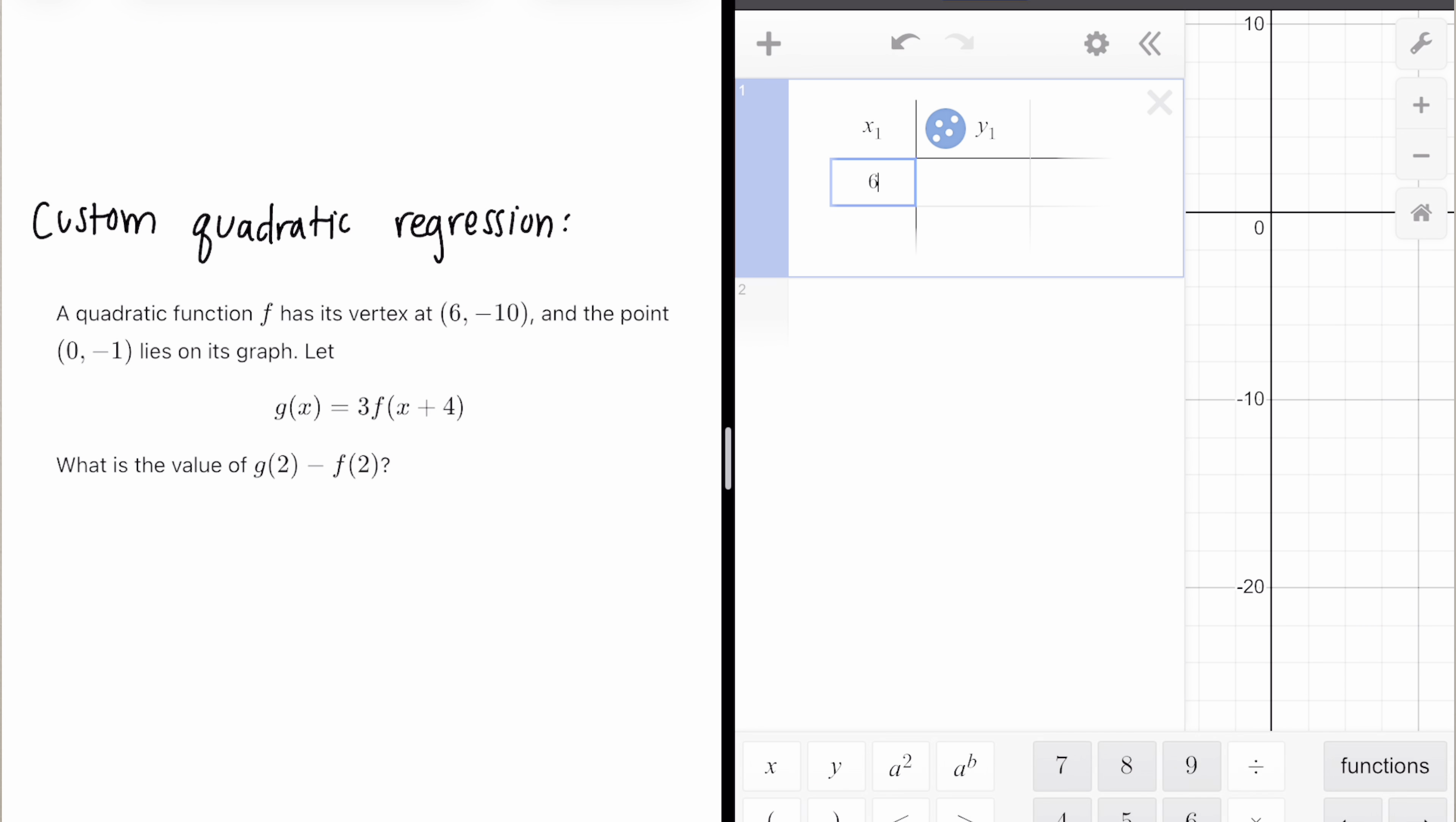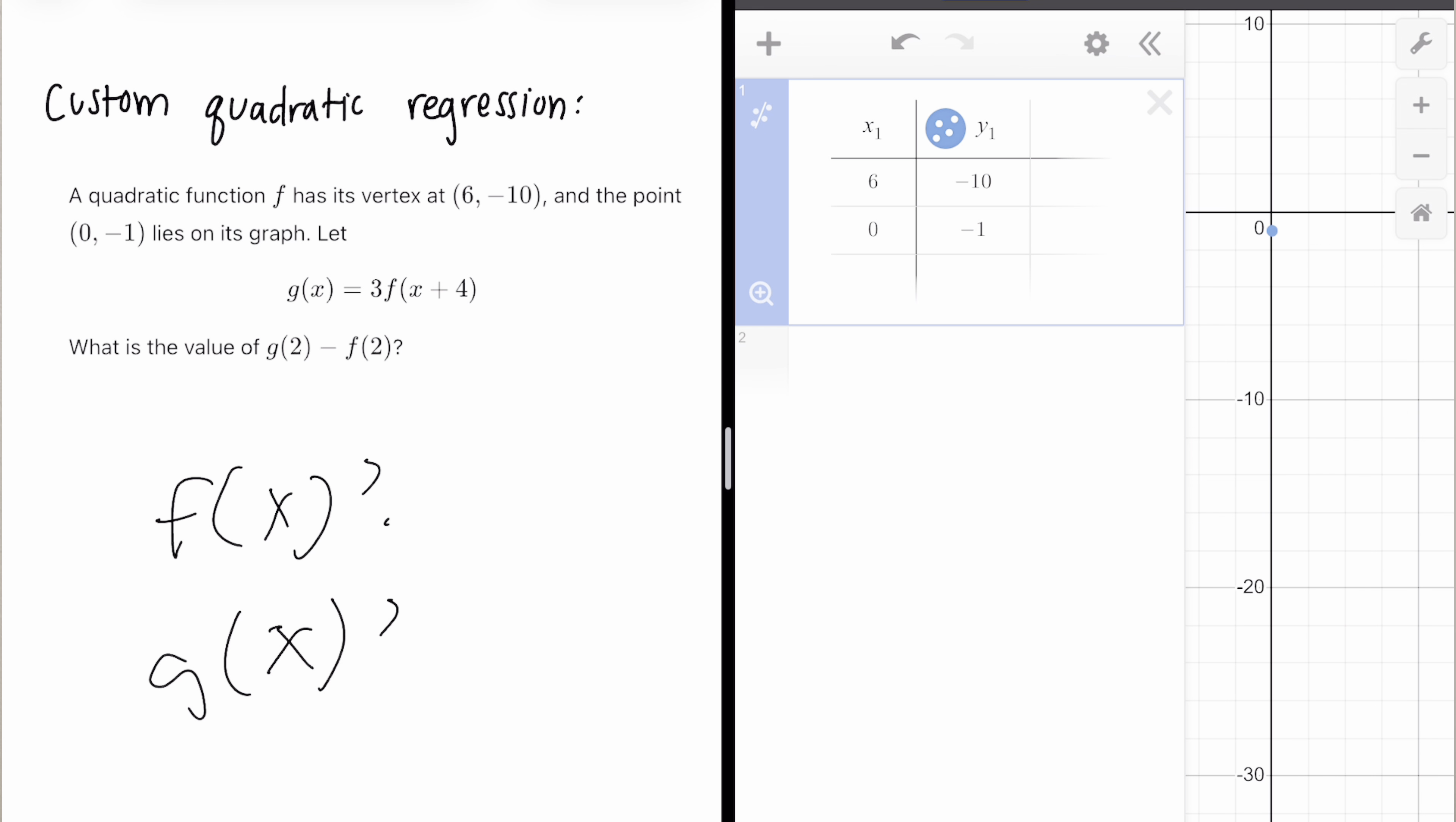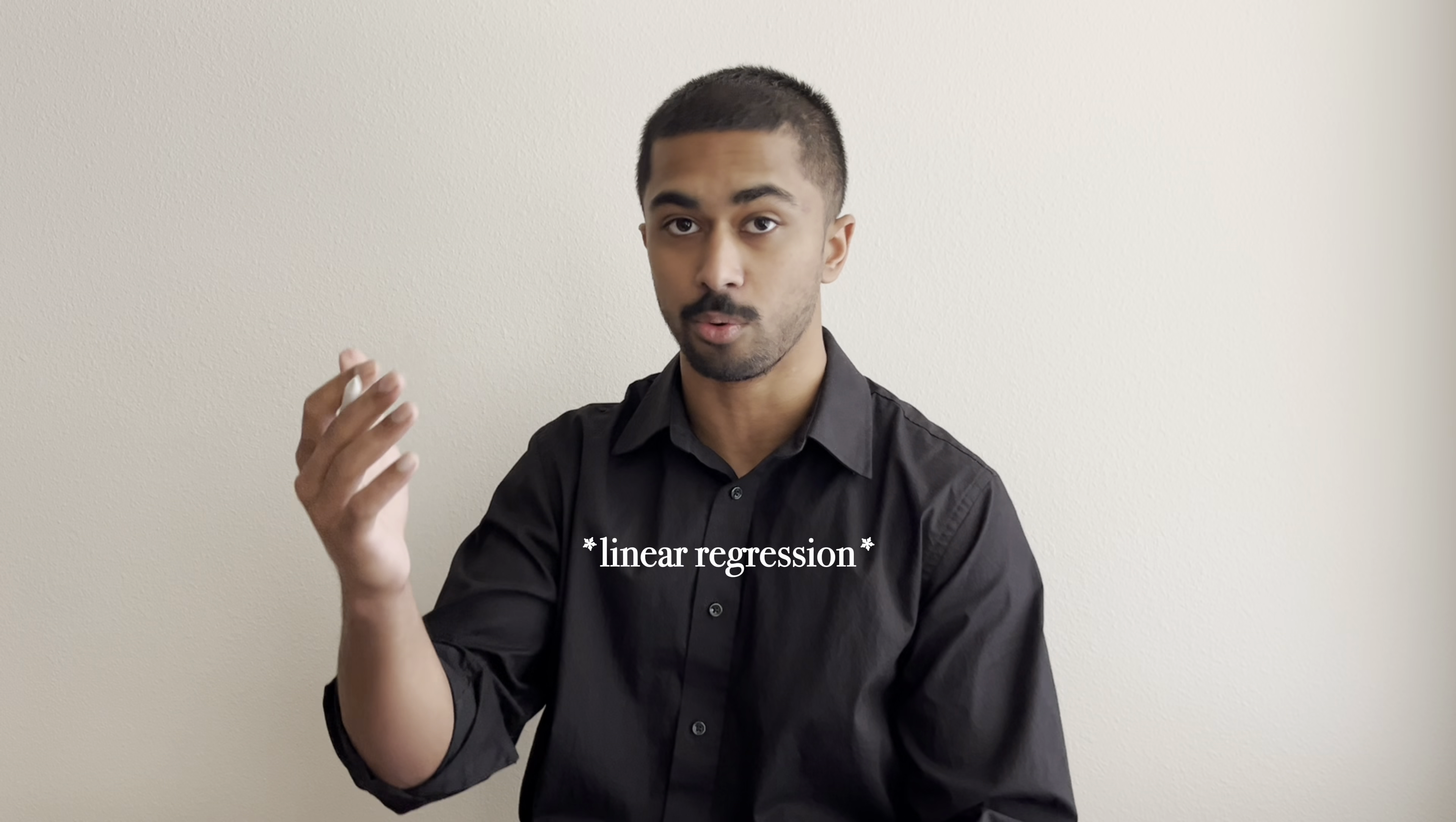All right. Again, we always start with the table whenever we're doing regressions. And then we do 6, -10 and 0, -1. Well, what is F(X)? The second thing we need to find is what is G(X). And then from there, finding G(2) and F(2) is pretty simple. And we just subtract the two. What we absolutely cannot do is press this button for add regression, and then switch it to quadratic. This gives us the vertex at (0, -1), even though we want the vertex right here at this point. And we also want it to face upwards.